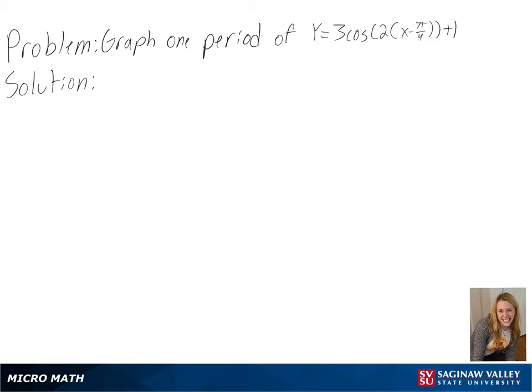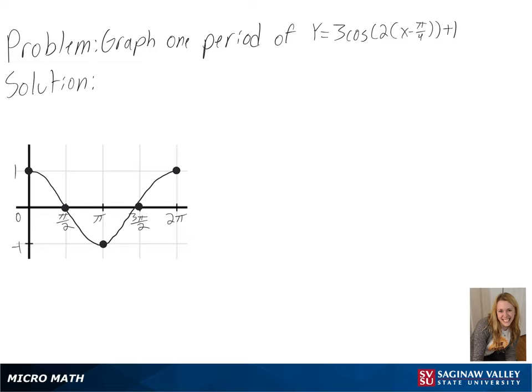Our problem is to graph one period of y equals 3 cosine of 2 times x minus pi over 4 plus 1. We can look at an original graph of y equals cosine of x to see how ours will be changing.